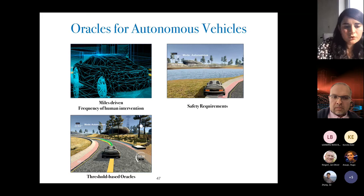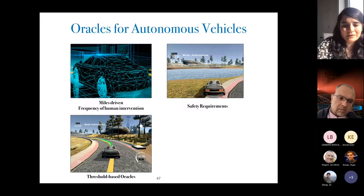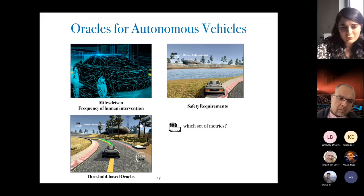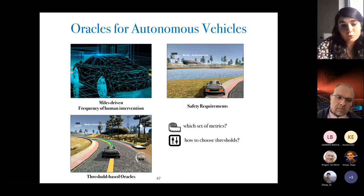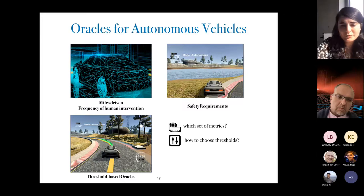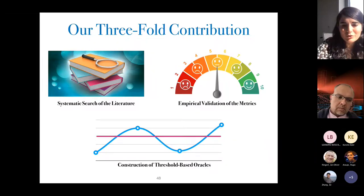Another subset of academic works focuses on context-aware thresholds as test oracles — for example, checking whether the predicted steering angle differs from the ground-truth angle by more than 5 degrees. However, there is no comprehensive work that analyzes which set of metrics should be considered and how to calculate an optimal threshold. The objective of our work is to provide such a list of metrics as well as an automated approach to calculating the optimal threshold. We conducted three different studies for this purpose.